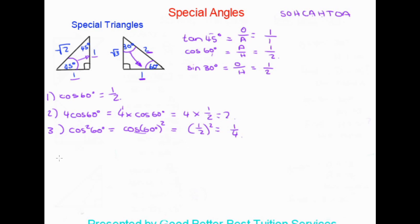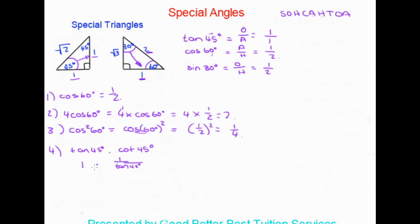For the next example, we have tan 45 degrees times cot 45 degrees. We find tan 45, which is one over one, equal to one. Cot 45 is one over tan 45 — the inverse of one over one — which also equals one. So the final answer is one times one, equal to one.